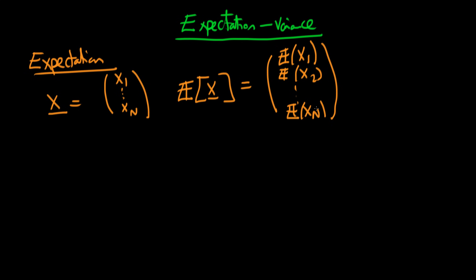So that's quite a simple generalization of the expectation from a scalar quantity to that of a vector quantity, and because of this simple generalization we can talk about some of the properties of the expectations operator when we're talking about a random vector.